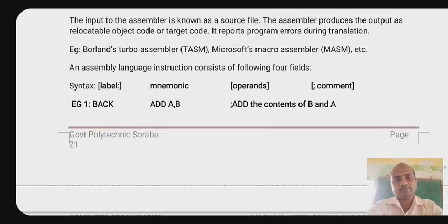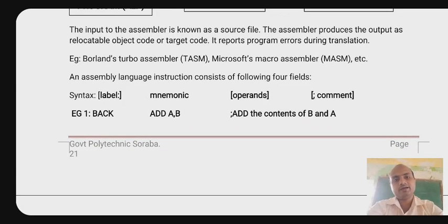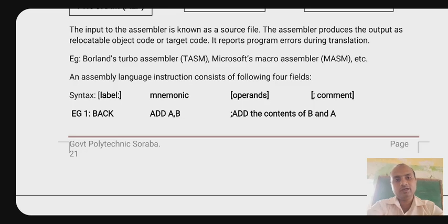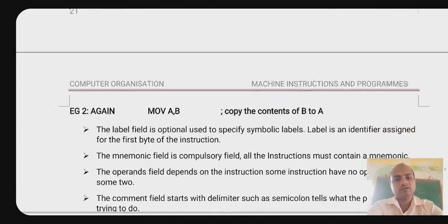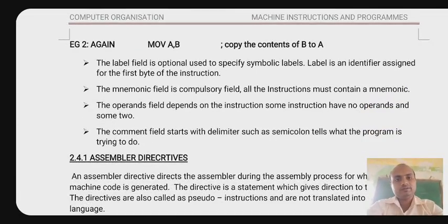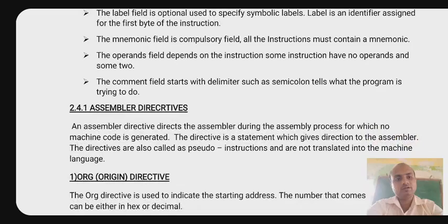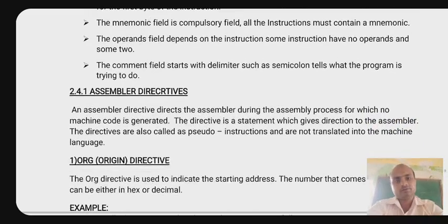For example: label ADD A, B. The label is optional and indicates the first byte address of the instruction. The mnemonic is compulsory. Operands may be two, three, one, or zero operands depending upon the operation. The label field is optional. Next, we go to the assembler directives.